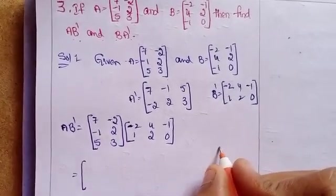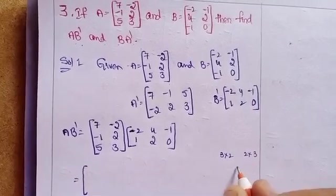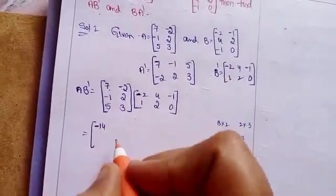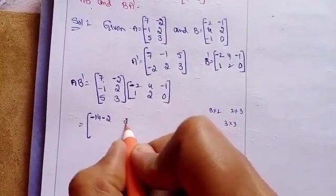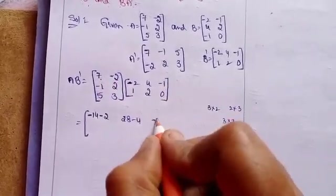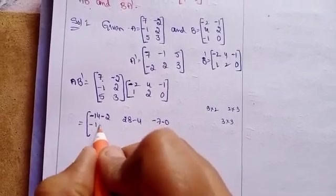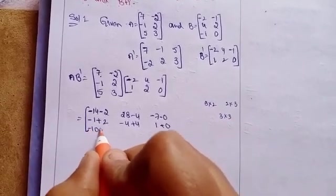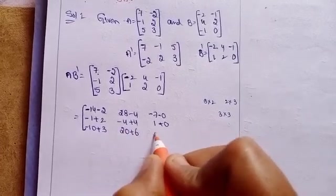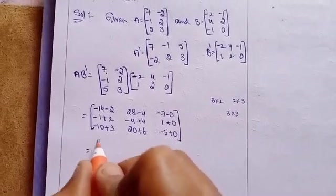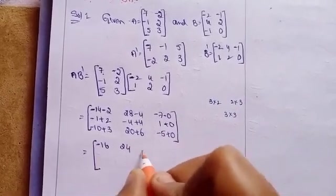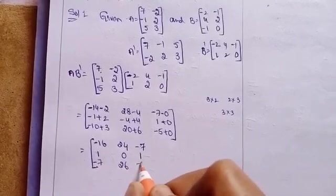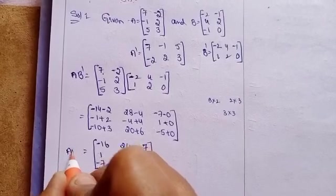Computing A into B transpose: row by column multiplication gives entries: minus 14 minus 2 equals minus 16, 28 minus 4 equals 24, minus 7 minus 0 equals minus 7; minus 1 plus 2 equals 1, minus 4 plus 4 equals 0, 1 plus 0 equals 1; minus 10 plus 3 equals minus 7, 20 plus 6 equals 26, minus 5 plus 0 equals minus 5. This is A into B transpose.